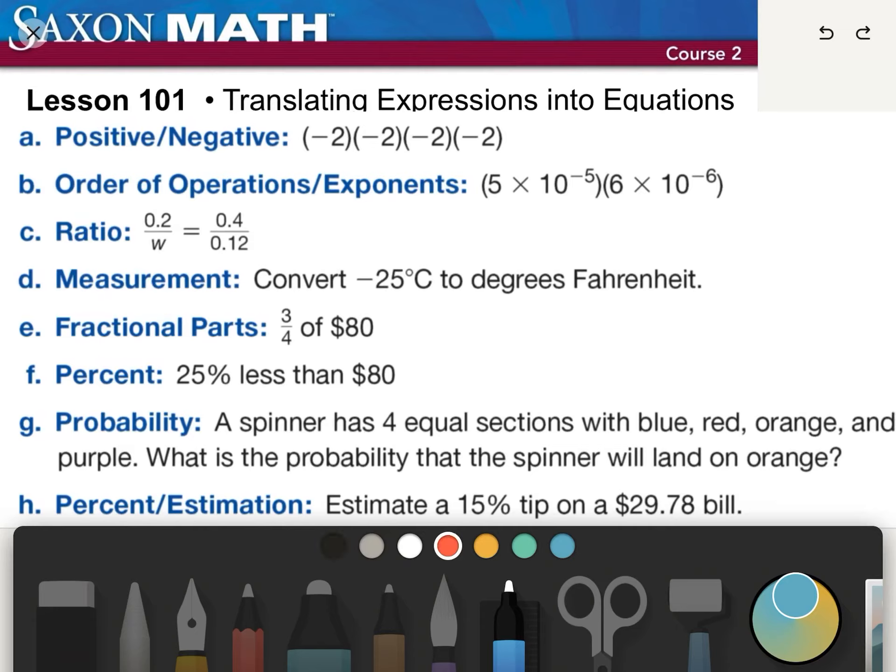Starting out with positive and negative. Look at all these negative signs, but it's really fairly simple. We just need to count our negative signs. One, two, three, four. So we have an even number of negative signs, which will get us a positive result. So then we just say two times two is four, and four times two is eight, and eight times two is 16.